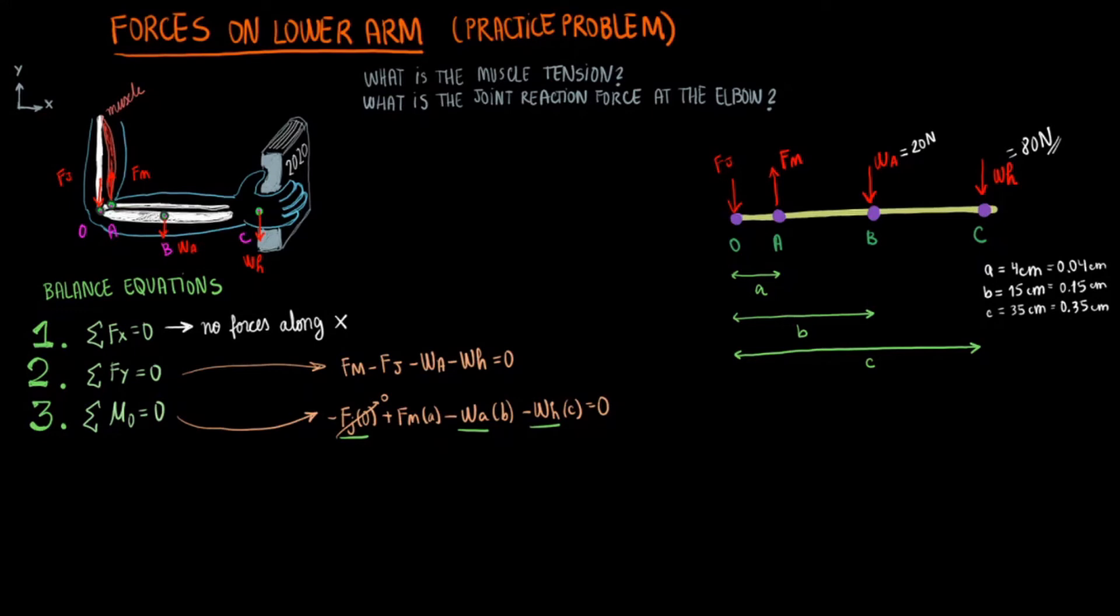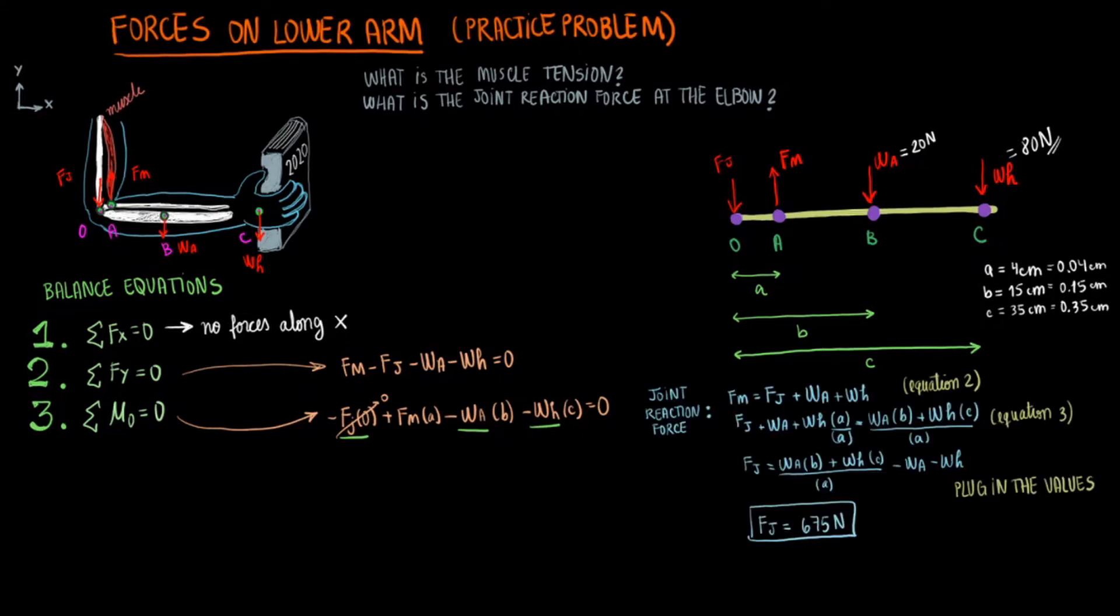Now it is just a matter of solving the system of equations. Make sure that the units all match so we will have to convert the distances from centimeters to meters. Then you can solve the system of equations for the joint reaction force. Please feel free to pause the video to read through or follow the calculations. The answer turns out to be 675 newtons for Fj. You can then plug in the value from the joint reaction force into equation two and solve for the muscle tension. The muscle tension turns out to equal 775 newtons.